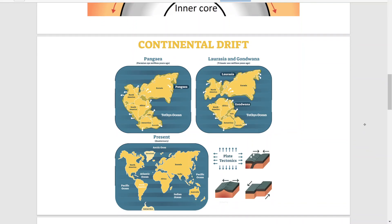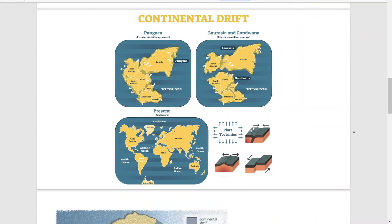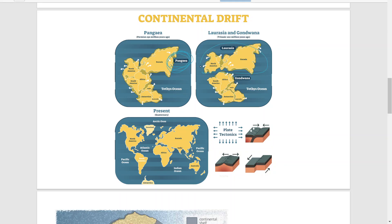Now that we know how convection currents work and that Pangaea existed, we can start looking at continental drift in a bit more detail. Alfred Wegener in 1912 theorized that there was this land mass called Pangaea, and then about 200 million years ago, they split into Laurasia and Gondwanaland. This is all happening because of those convection currents. Over millions and millions of years, they slowly moved away from each other.